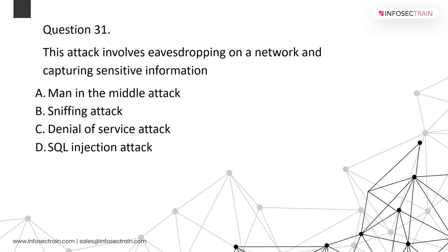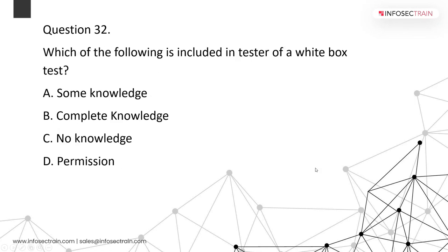An attack that involves eavesdropping on the network and capturing sensitive information — what kind of attack is it? To perform a sniffing attack, it can also be considered a man-in-the-middle attack. In white box testing, the pen tester has complete information. The three types of pen testing are: black box (no information), gray box (some information), and white box (complete information).